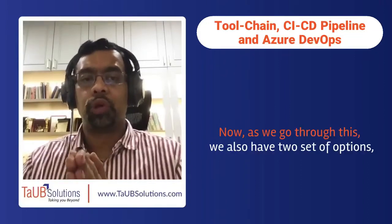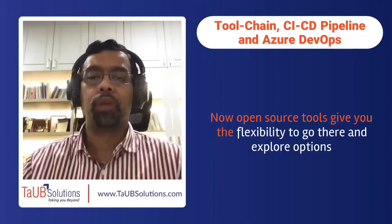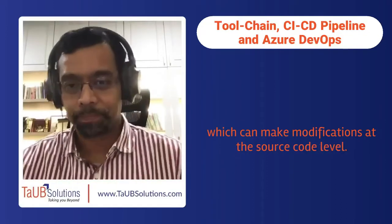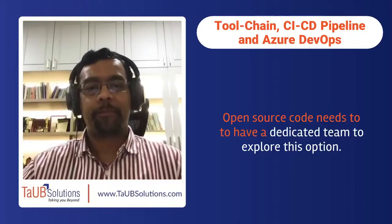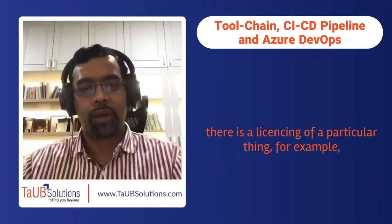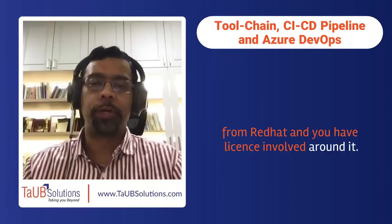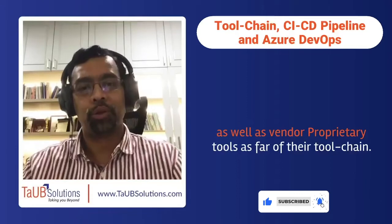There are two sets of options: open source tools and proprietary or vendor-related tools. Open source tools give you flexibility to explore options and make modifications at the source code level, but remember — open source is not really free. It needs a dedicated team to explore those options. Proprietary tools involve licensing, for example using OpenShift from Red Hat as opposed to Kubernetes. Many organizations use a combination of both open source and vendor proprietary tools as part of their tool chain.